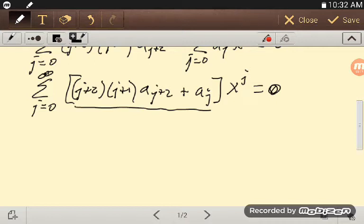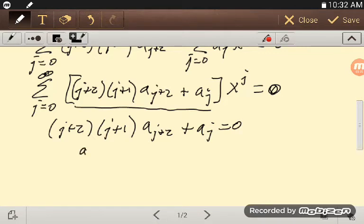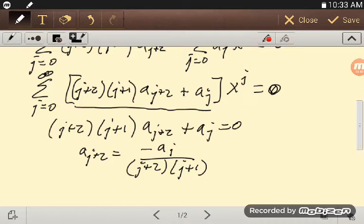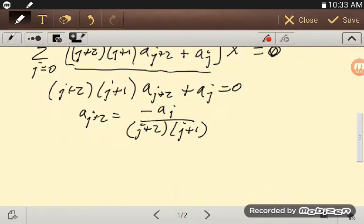So if I write this down, I have that j plus 2 times j plus 1 times a sub j plus 2 plus a sub j is equal to 0, which means a sub j plus 2 is equal to minus a sub j over j plus 2. There's my grandson coming in, I guess he's going to help or something. Okay, so we have that, and what we know is that a 0 equals 0 and a 1 equals 1.